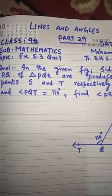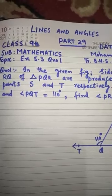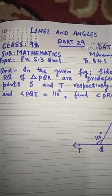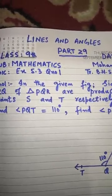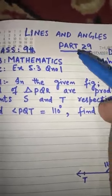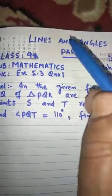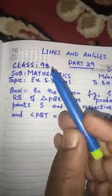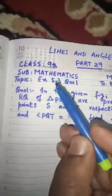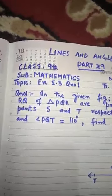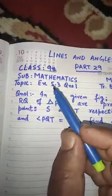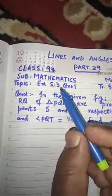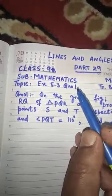Dear students, Assalamu alaikum wa rahmatullahi wa barakatuhu. Today is our lecture number 29 from the chapter Lines and Angles in ninth class Mathematics. Today's topic is exercise 5.3, question number one.